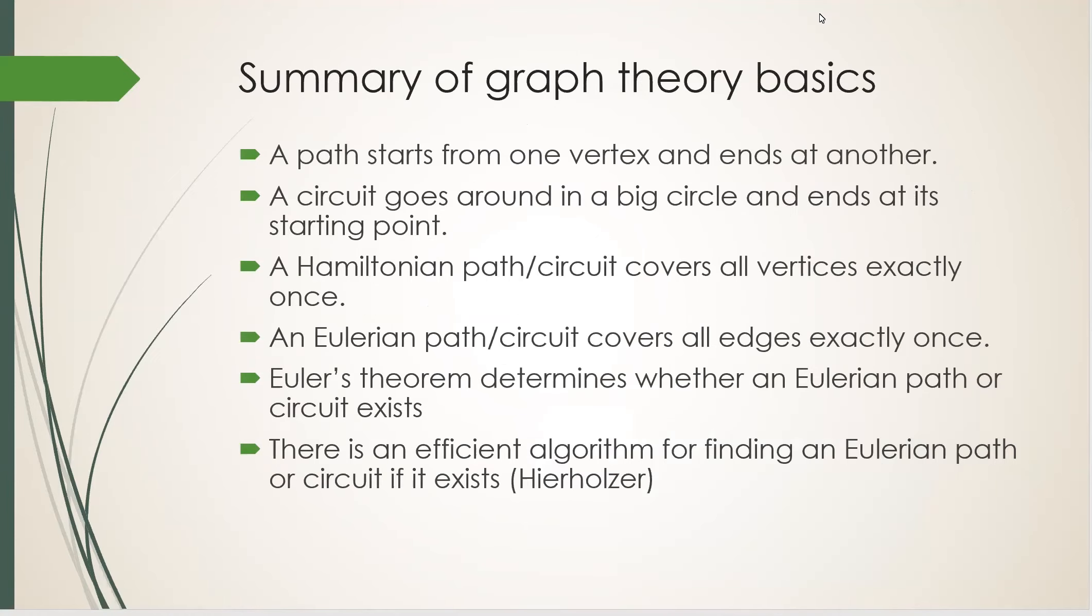So in summary, we've gone through the definition of path, circuit, Hamiltonian and Eulerian path and circuit. We've gone over Euler's theorem for the existence of an Eulerian path or circuit, and the fact that there is an efficient algorithm for finding one.